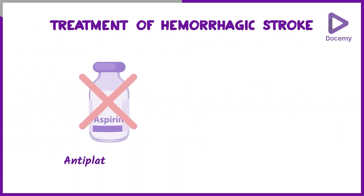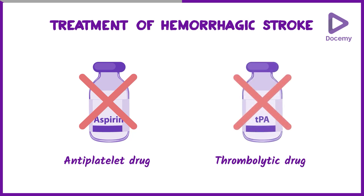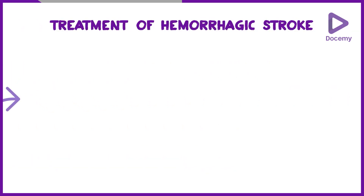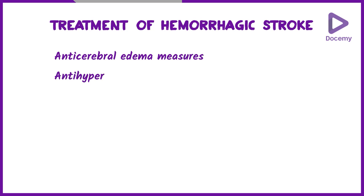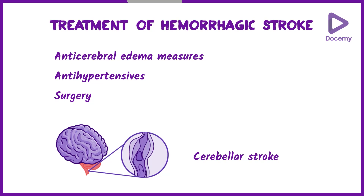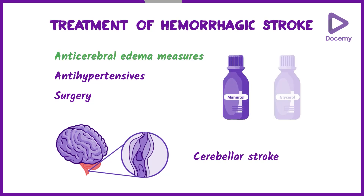In hemorrhagic stroke, antiplatelet drugs and thrombolytic drugs are absolutely contraindicated. We manage with anti-cerebral edema measures, antihypertensives, and sometimes surgery. Surgery is indicated in selected patients, such as in a cerebellar stroke. Anti-cerebral edema measures commonly used are mannitol, glycerin, and diuretics.